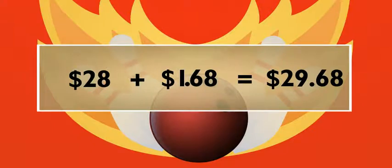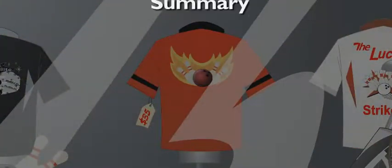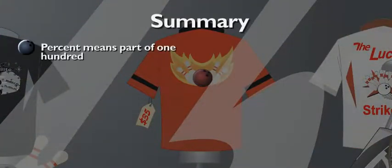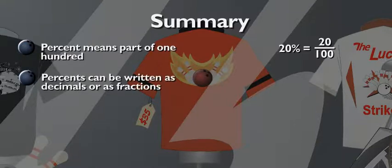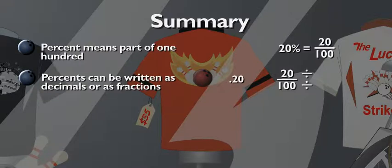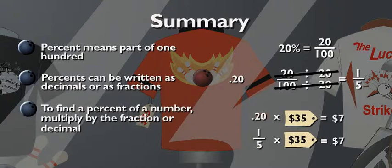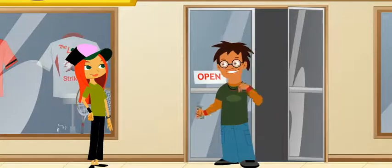Just enough! Come on, let's buy it. But first, how about we go over all this percent stuff one more time? The most important thing to remember is that percent means part of one hundred. So twenty percent is the same as twenty hundredths. You can write a percent as a decimal like .20, or as a fraction like twenty over one hundred. Remember to simplify the fraction if you can, then use either to multiply the number. Sam, you amaze me. Now let's buy that shirt!